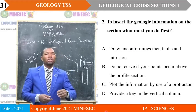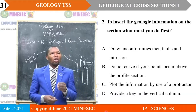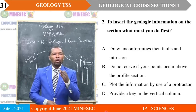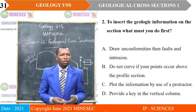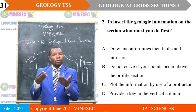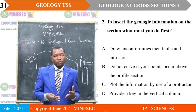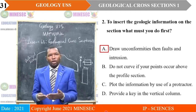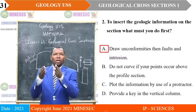To insert the geologic information on the section, what must you do first? A: draw unconformities, then faults and intrusions; B: do not curve if your points occur above the profile section; C: plot the information by use of a protractor; D: provide a key in the vertical column. The correct answer is A. To insert geologic information on the section, you should begin first with unconformities, then faults and then intrusions, because they lie discordantly.